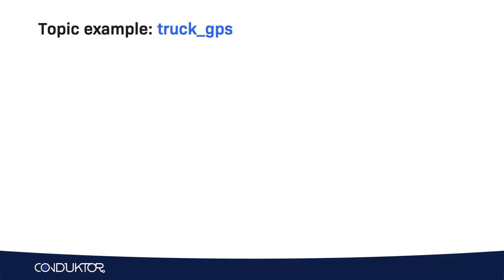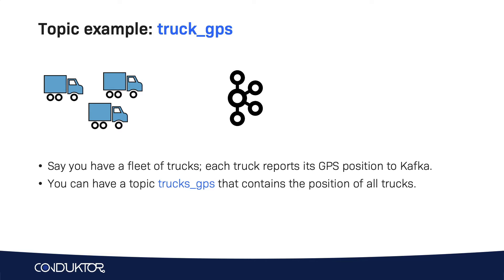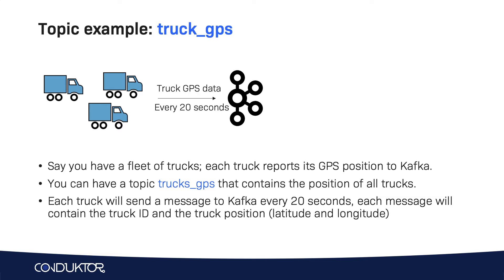What can go into a topic? Let's go through an example where we have trucks around the road. We have a fleet of trucks and we're a truck company, and what we want to do is to have the truck position in Kafka. Maybe we have many applications who need that stream of truck positions for a dashboard or some alerting. So we're going to create in Kafka a topic named trucks_GPS, and that topic will contain the position of all the trucks in real time. Each truck is going to send to Kafka, maybe every 20 seconds, their position, included as part of a message containing the truck ID and the truck position itself.